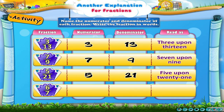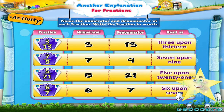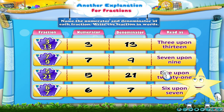And now answer the last one: here the numerator is 6, the denominator is 7, and the fraction is read as 6 upon 7. So today you have learnt another way of looking at fractions. Bye!